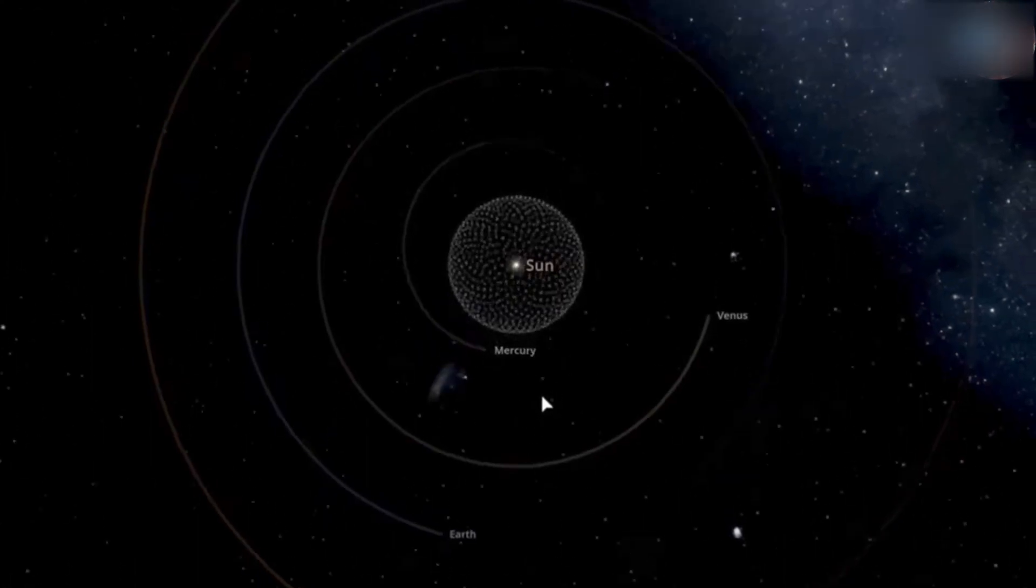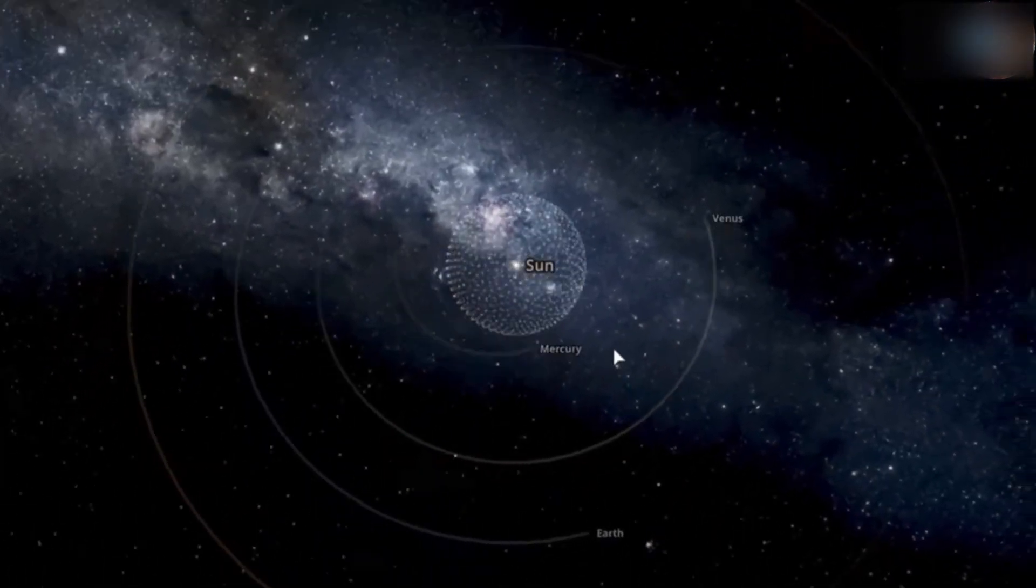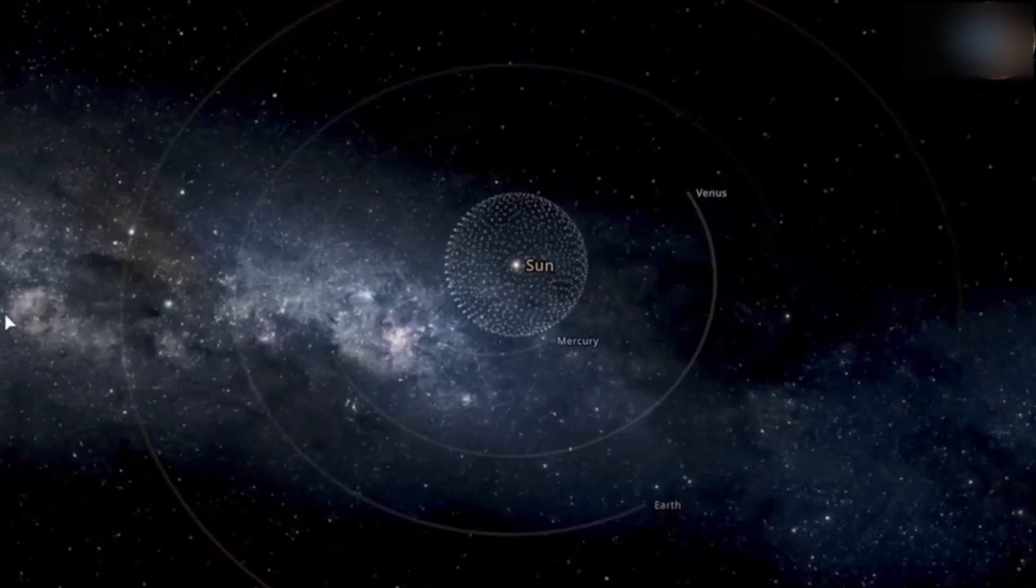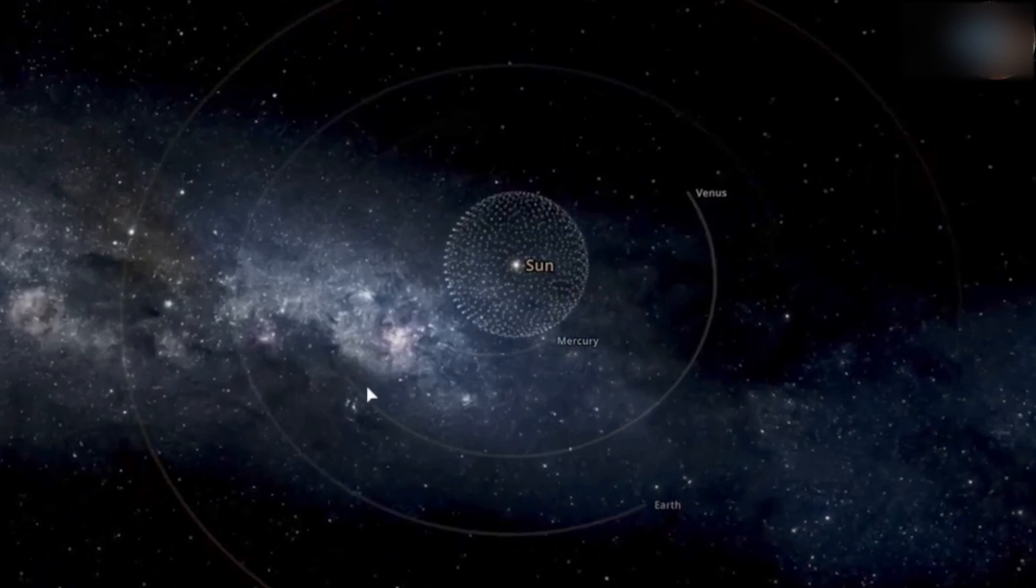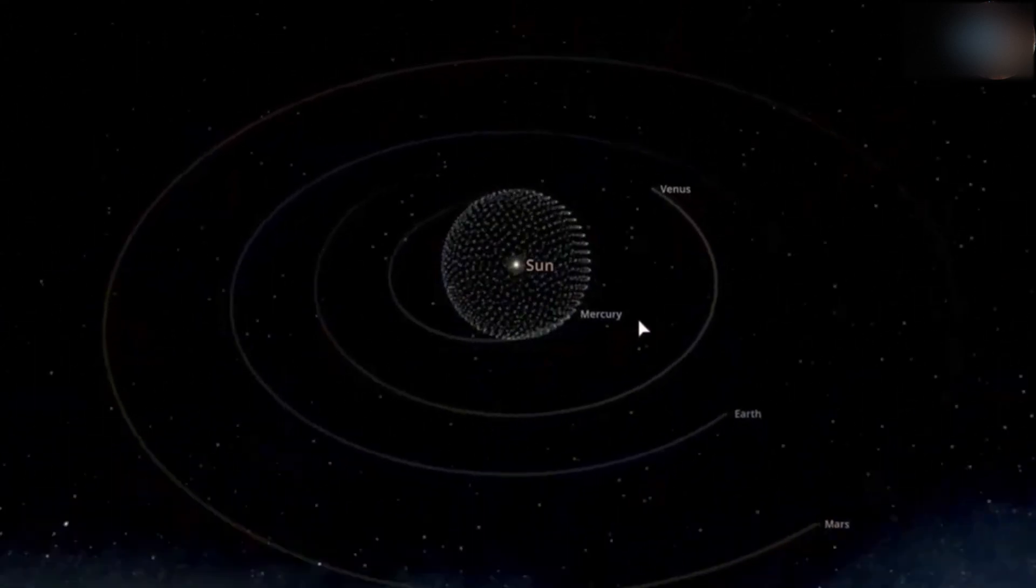According to this theory, as an object with mass approaches the speed of light, its relativistic mass increases, and the energy required to accelerate it further also increases, making it impossible to reach or exceed the speed of light.